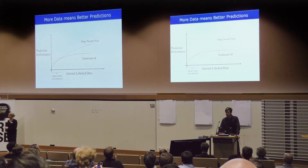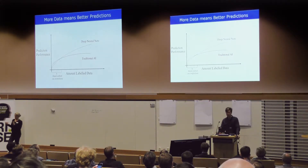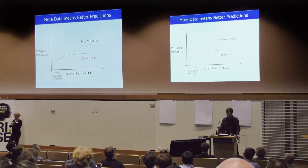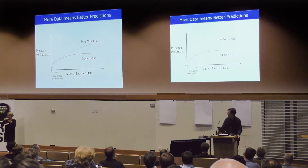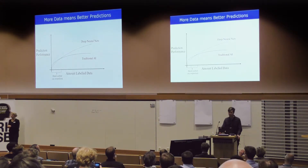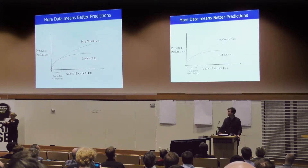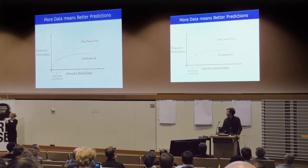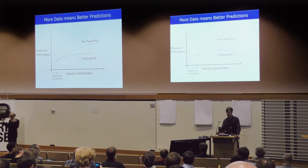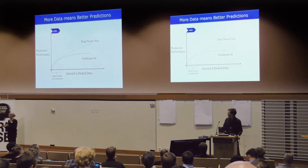From an AI or deep learning perspective, many of you will have seen this graph before. On the y-axis we have prediction performance, on the x-axis we have the amount of good quality labeled training data available. With limited training data, traditional techniques can outperform deep learning, but as we get more labeled data, deep learning tends to outperform traditional AI.